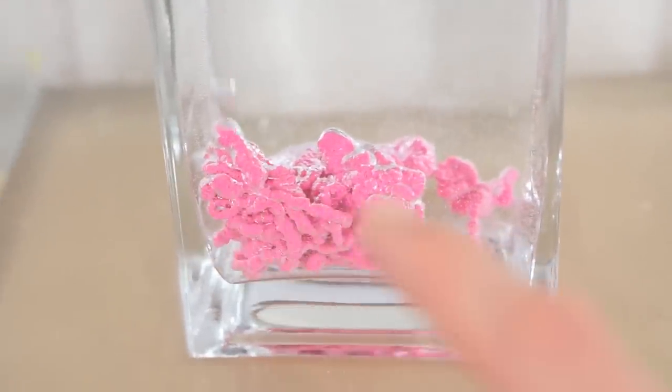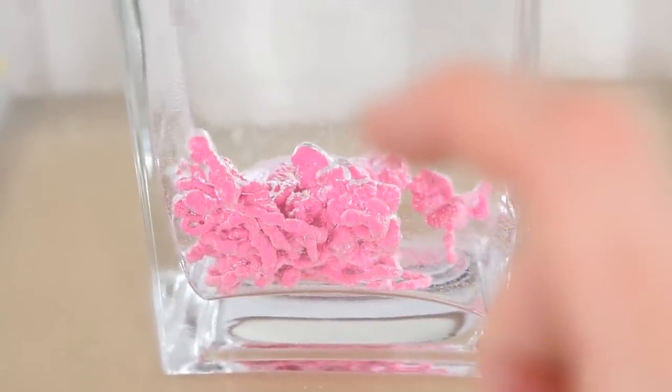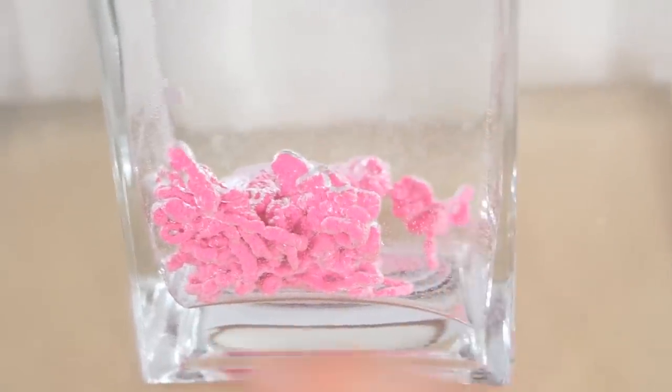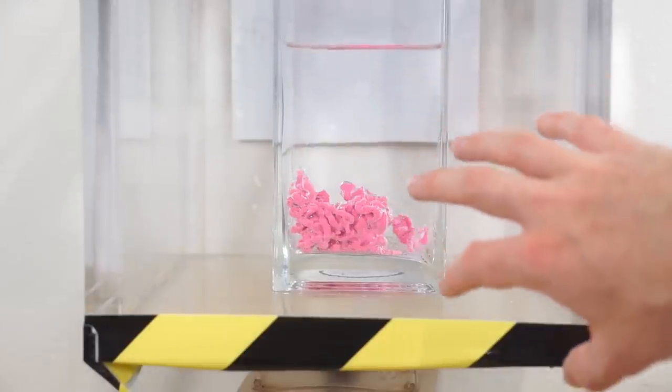You can see how shiny it is too. The shininess actually comes from the different refractive indices of the water and the air. So the light reflects off of it. We're at about 0.1 atmospheres.